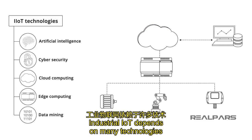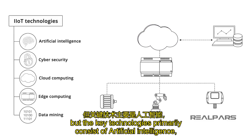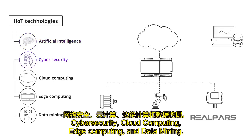Industrial IoT depends on many technologies, but the key technologies primarily consist of artificial intelligence, cybersecurity, cloud computing, edge computing, and data mining.